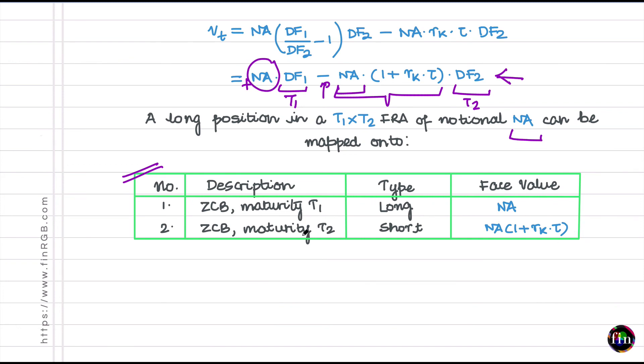Now remember this that every time I am telling you the mapping logic for a long position. We did it for a long currency forward and this is for a long FRA. If you have to find the mapping positions for the short positions just simply reverse the signs of these positions which we got for the long. That means for a short position in a T1 cross T2 FRA you will need a short position in a T1 maturity ZCB and a long position in a T2 maturity ZCB.